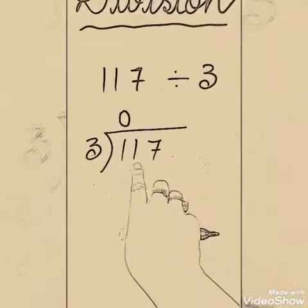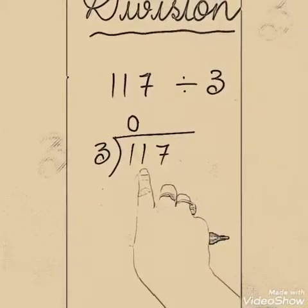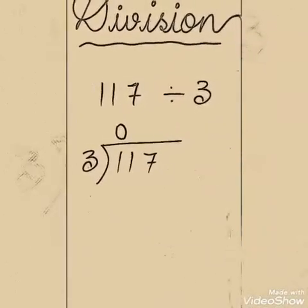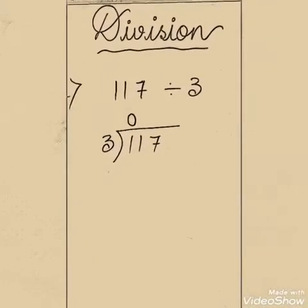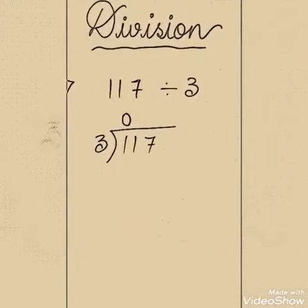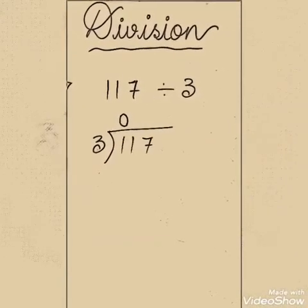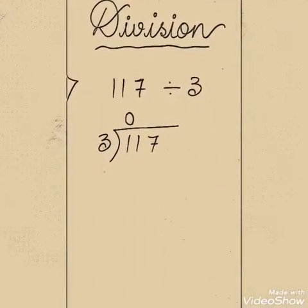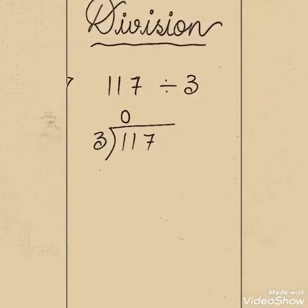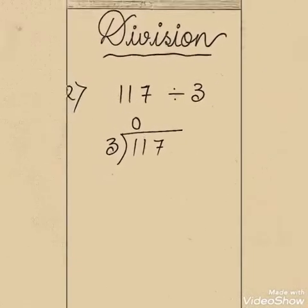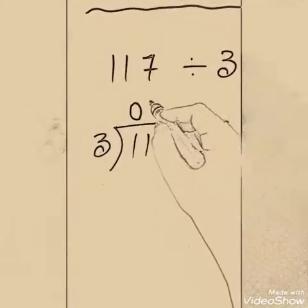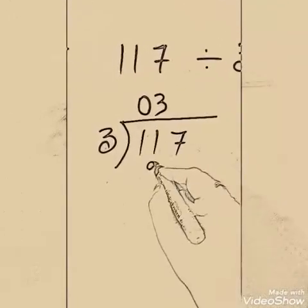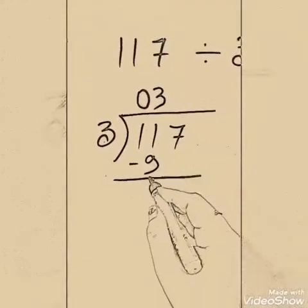Now we will take these two digits together and it makes 11. Now inspection again — 11 is greater than 3. So now we will see the table of 3 to get a number equal to 11 or just less than 11. 3 ones are 3, 3 twos are 6, 3 threes are 9, 3 fours are 12 — stop, because 12 is greater than 11. So we take 3 threes are 9. Write 3 on top of the second digit. Subtract these two and you get 2.